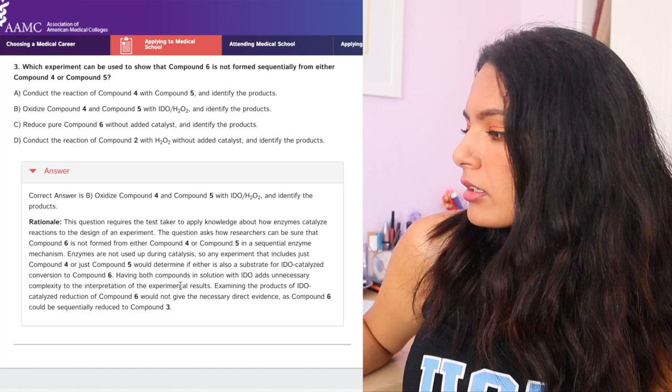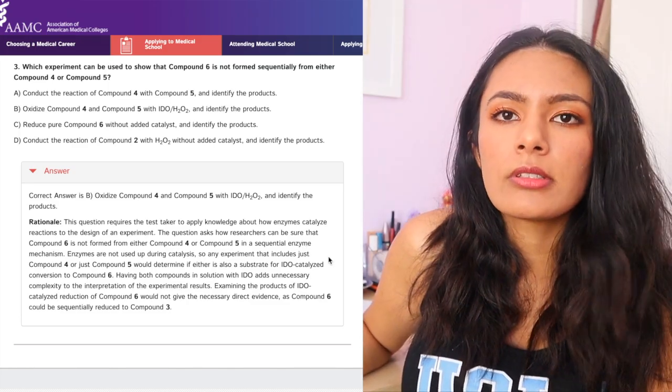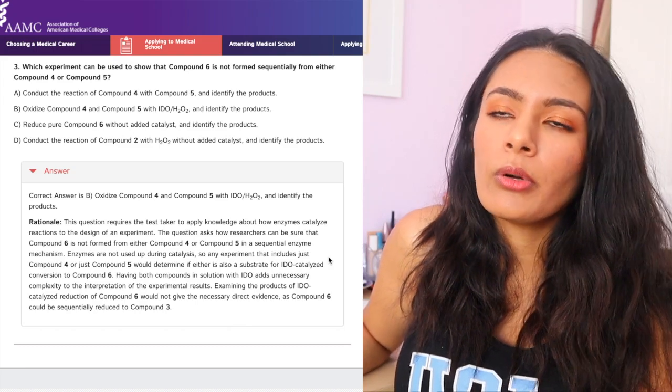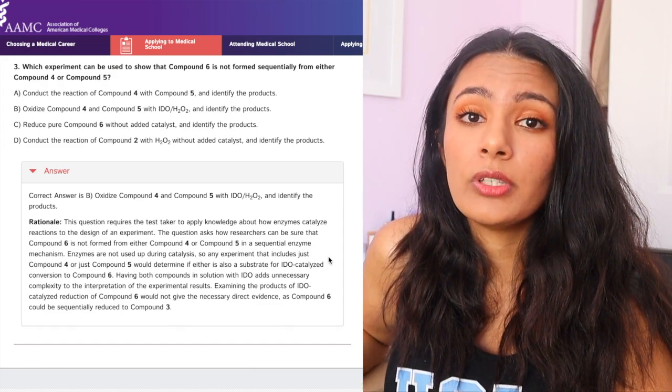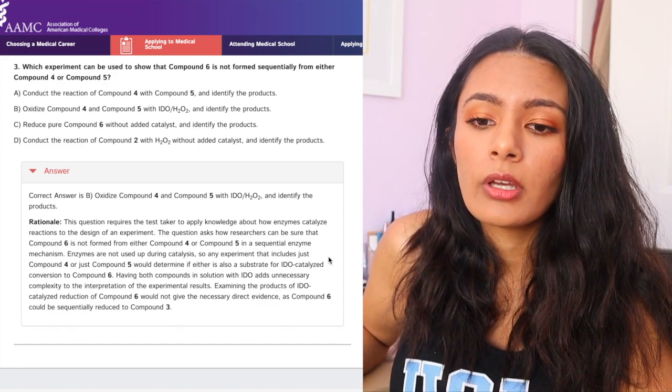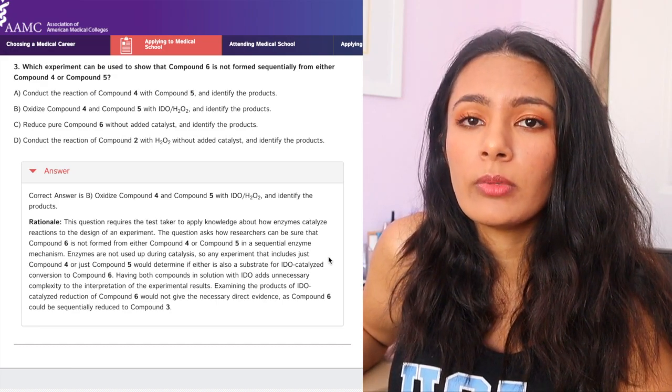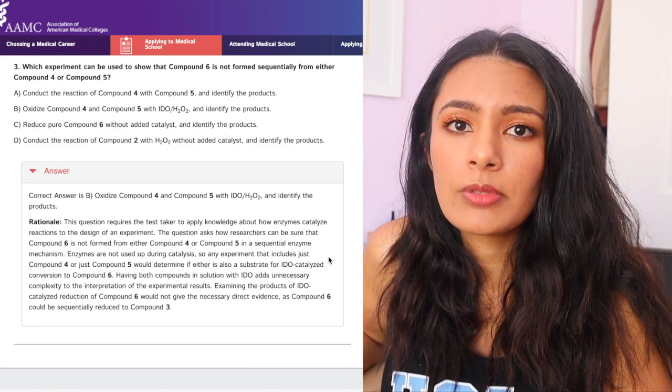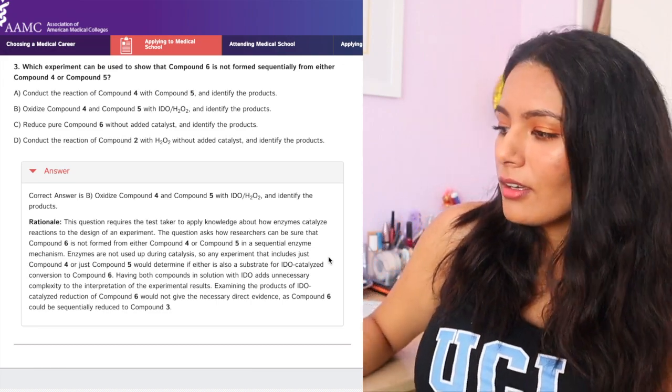Yeah. Okay. It is the right answer. So it's basically saying the same thing that I did that you want to double check and make sure that compound six is informed from a sequential enzyme mechanism. And so I guess the takeaway for this question would just be, remember that enzymes are not used up in reactions. And so they are present in solution even after products form. And you have to make sure that those products that are formed aren't then again reacting with the enzymes present in solution and forming even more products. That would be a sequential reaction.